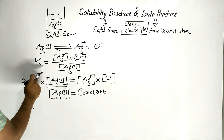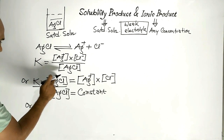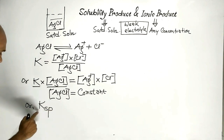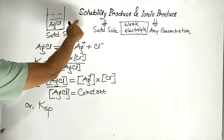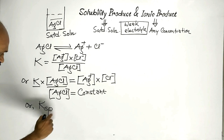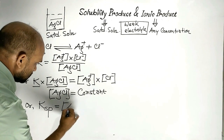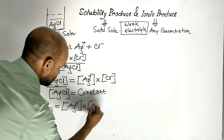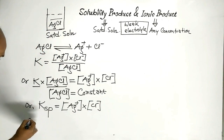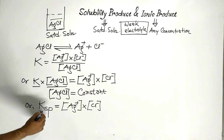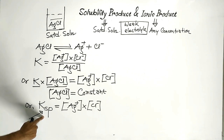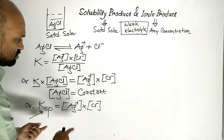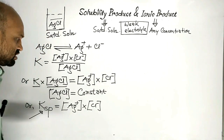Since concentration of silver chloride is constant, we can write a new constant term: Ksp, which is the solubility product. Solubility product Ksp equals the concentration of silver ion times the concentration of chloride ion. This Ksp is termed solubility product — the product of the concentrations of the ions of the solute at a particular temperature.